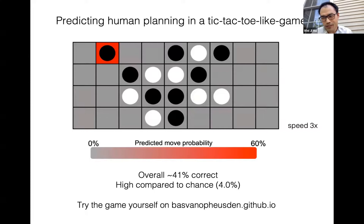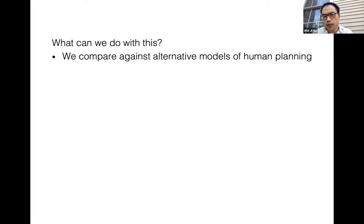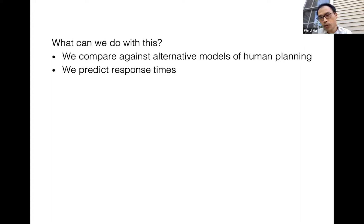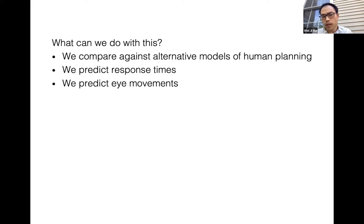We use this to study scientific questions in several ways. First, we compare against other models of human planning to contrast different theories. We can also predict response times, because our models predict how big a decision tree somebody is going to build — sometimes it's harder, and people think longer. We also predict where people look, since our model tells you where you should be paying attention.